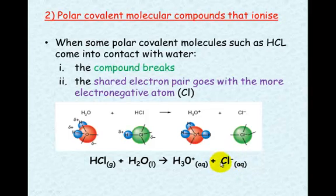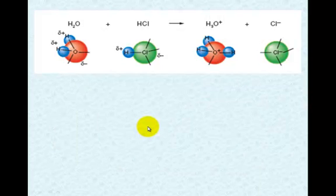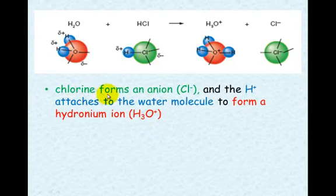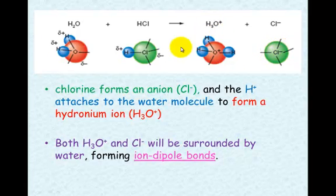This is ionizing the molecular compound — it's a polar covalent molecular compound that ionizes, forming an ion only because the affinity of the hydrogen to the oxygen in water is greater than the attraction of the hydrogen to the chloride. The chlorine forms an anion (chloride) and the H⁺ attaches to the water molecule to form a hydronium ion. Both the hydronium and the chloride will be surrounded by water molecules, which form ion-dipole bonds.